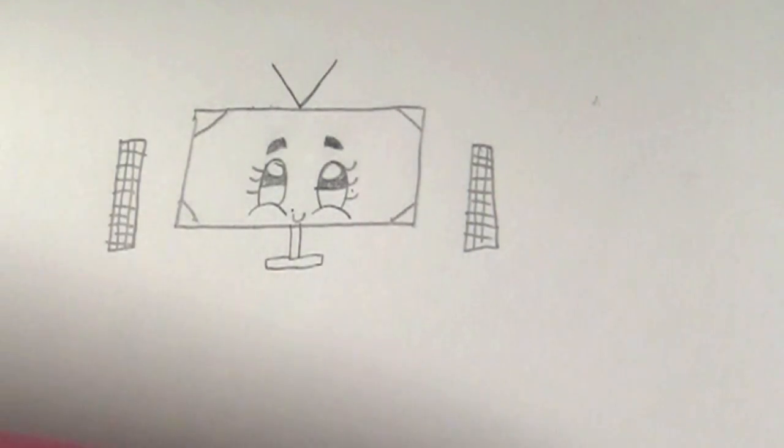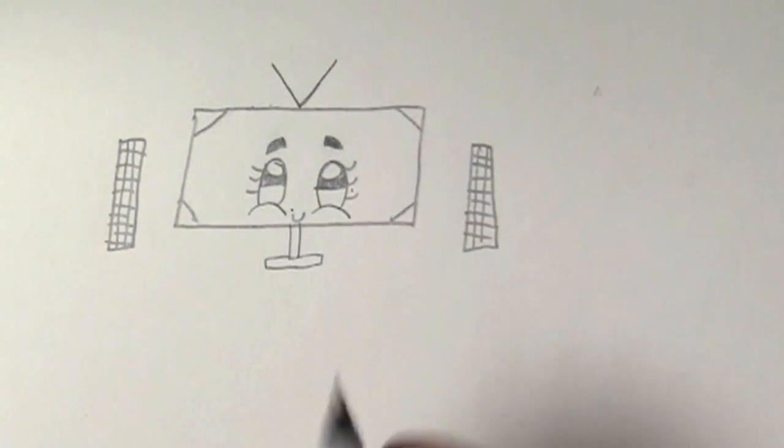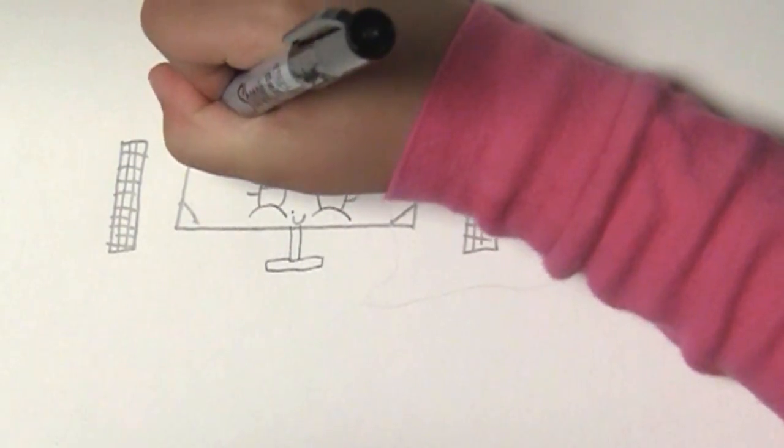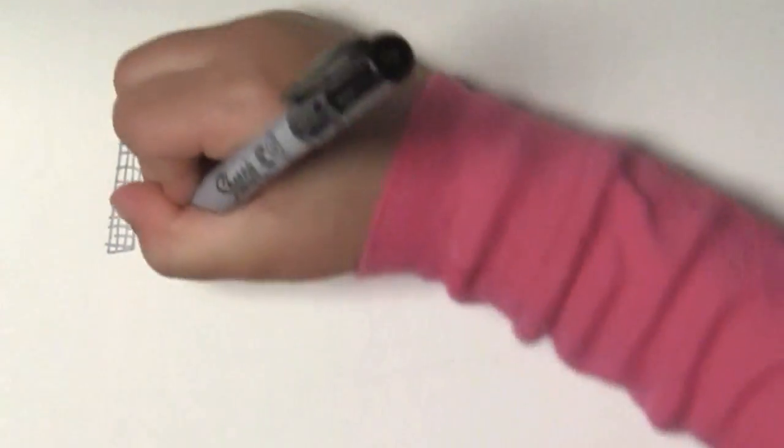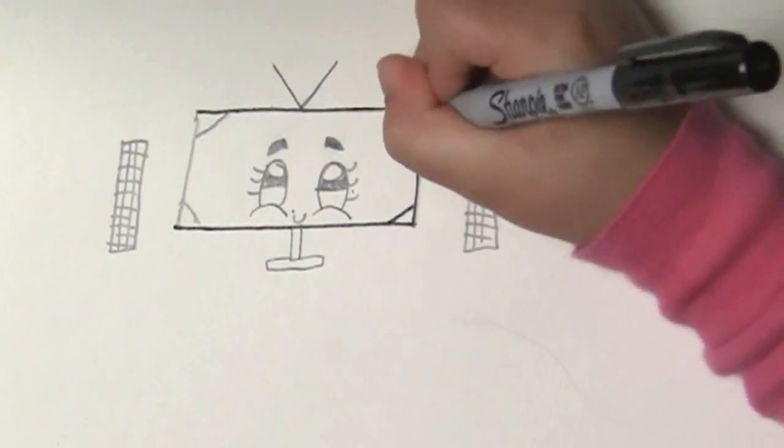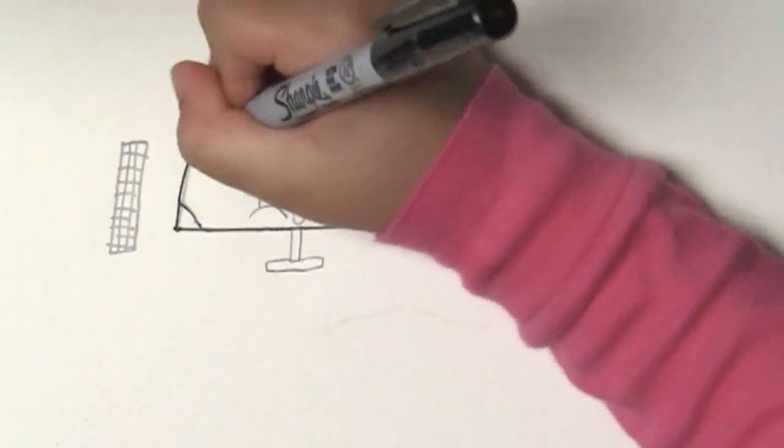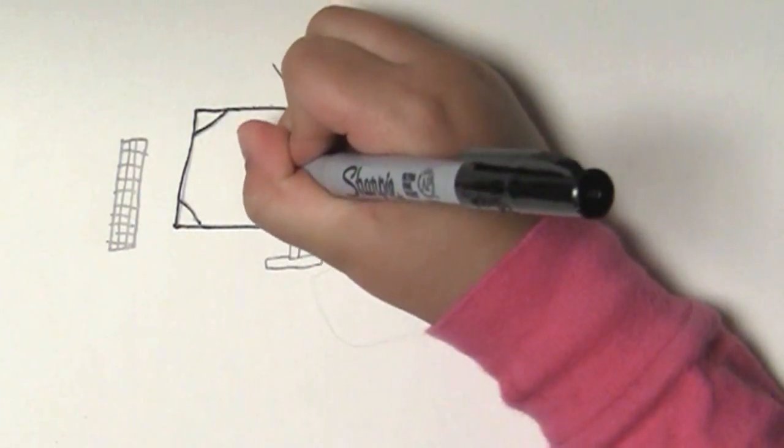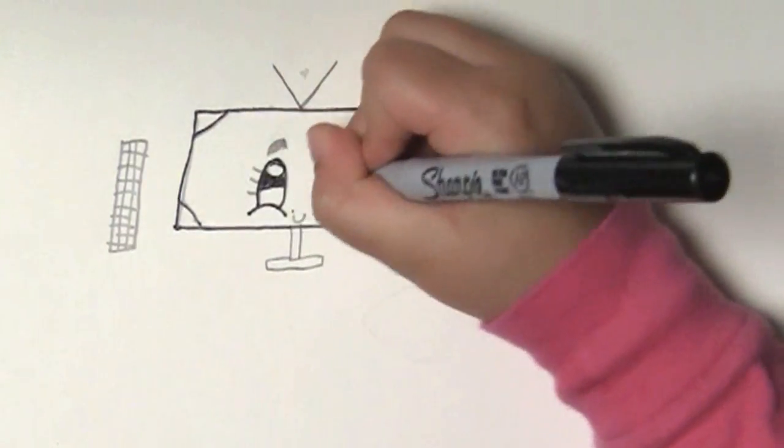And then what you're going to do is you're going to trace all of this stuff that you just did with a marker, with a permanent marker or a black marker. It doesn't really matter. Like that, through the eyes.